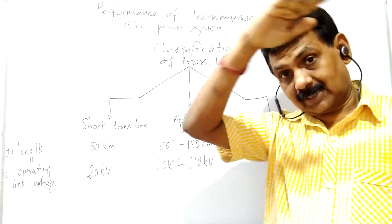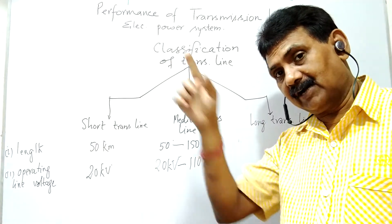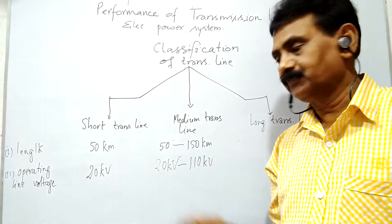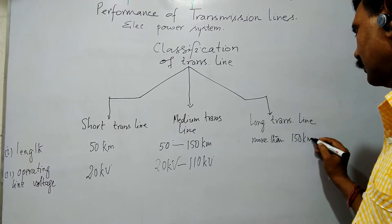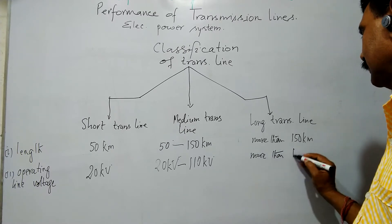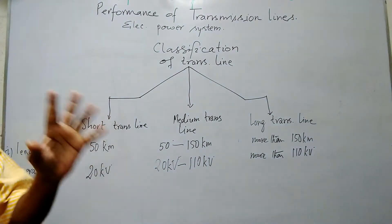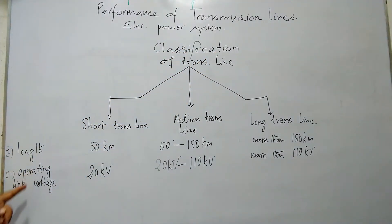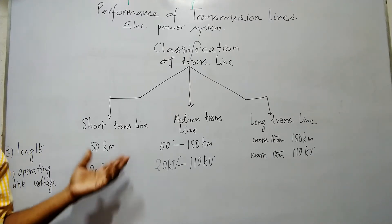For medium transmission line, operating voltage should be more than 20 kV and less than 110 kV, and length is 50 to 150 km. For long transmission line, operating voltage should be higher than 110 kV and length more than 150 km. The main criteria for classification are length and operating line voltage.